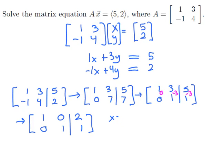And so now our augmented matrix has been put into reduced row echelon form. The top line reads x equals 2, and the bottom line reads y equals 1. And so that tells us that our vector X should be the vector (2, 1).